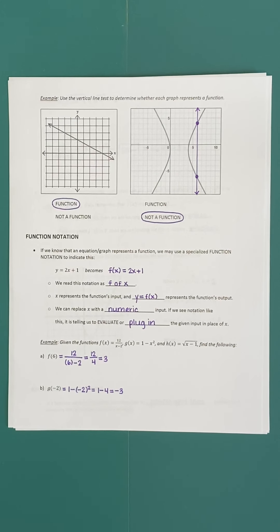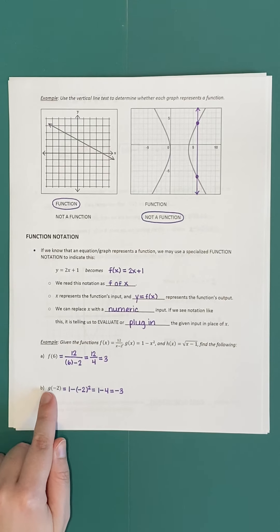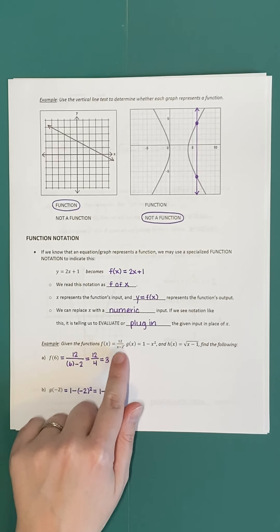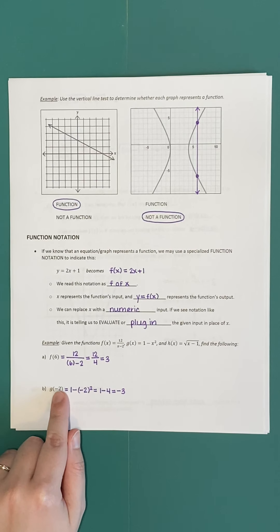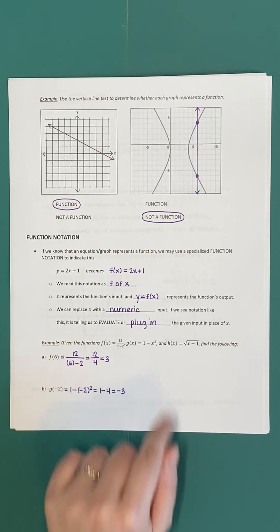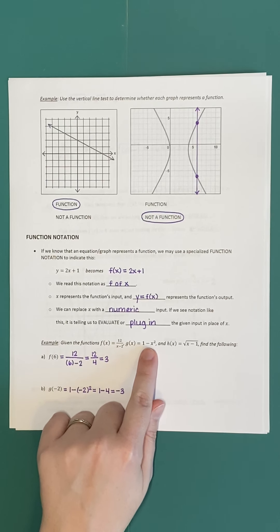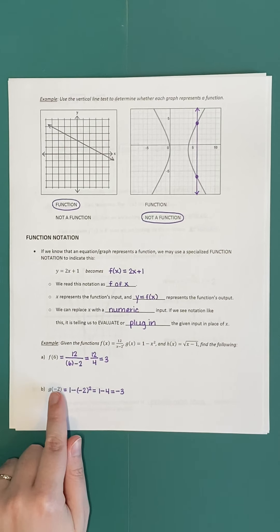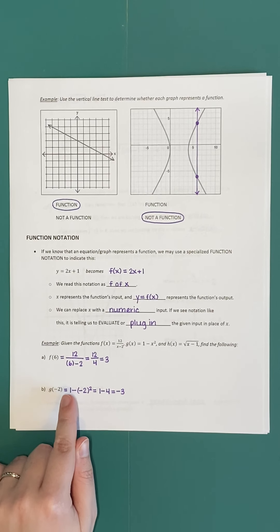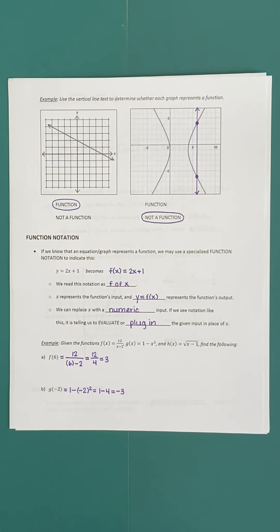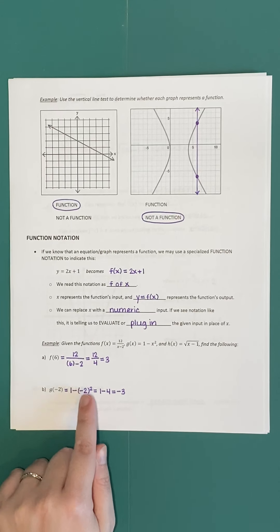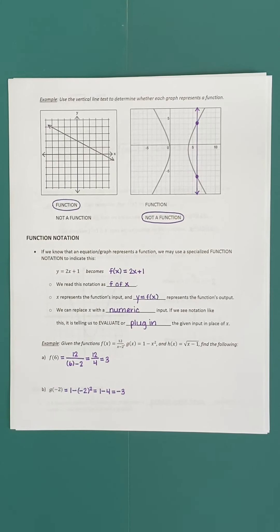Next, find g(-2): we're using the function g, with rule 1 - x², and applying it to an input of -2. So g(-2) = 1 - (-2)². When substituting, it's very important to put parentheses around what you substitute. This makes a critical difference here — without parentheses you might get a wrong answer. Let's simplify this step by step using order of operations.